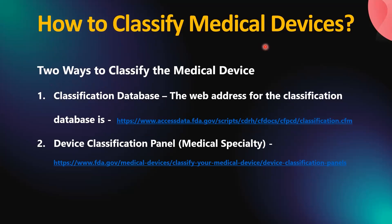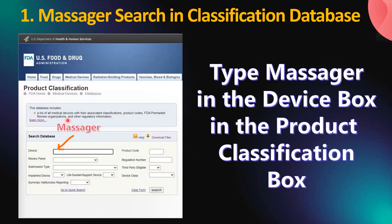Besides classification based on risks, there is also a need for product classification of your medical device. There are two ways to classify medical devices: one is through the product classification database, with the web address available in the comments section; and the second is through the device panel based on medical specialty, with the web address also in the comments section. We would like to share with you a demo of both these searches.